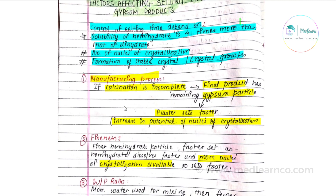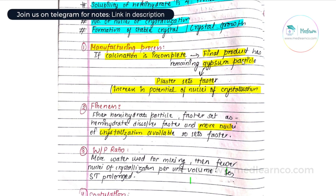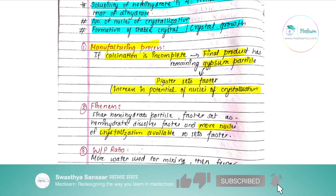First factor is manufacturing process. If calcination is done incompletely, in the final product some particles remain as dihydrate form. This dihydrate form will increase the potential of nuclei of crystallization, so the plaster will set faster.